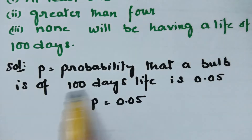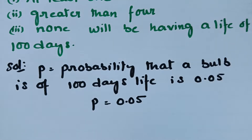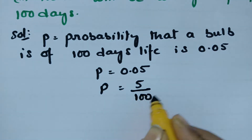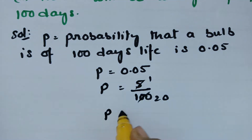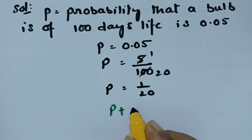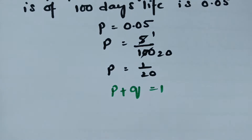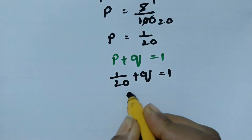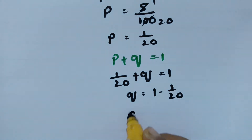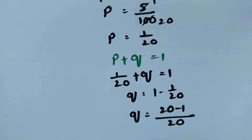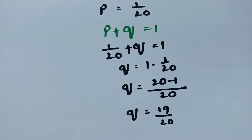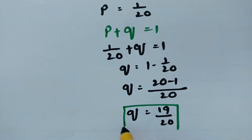In the solution, the probability that the bulb is of 100 days life is 0.05, so P is equal to 0.05, which can be written as 5 by 100. Cancelling, P equals 1 by 20. Since total probability P plus Q equals 1, we get Q equals 1 minus 1 by 20. Taking 20 as LCM, that is 20 minus 1 by 20, so Q equals 19 by 20.